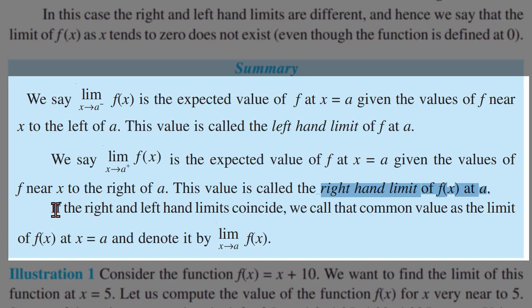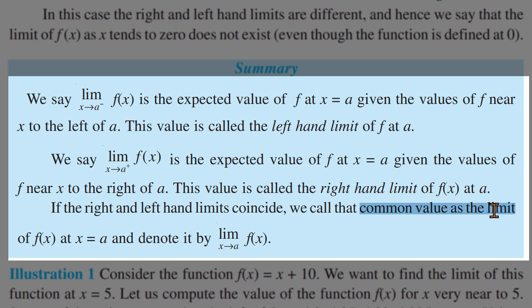The main rule is: the right-hand limit and the left-hand limit must coincide — they should be exactly the same value. If they are the same value, we call that the common value of f of x at x equals a, and we denote it as limit x tends to a of f of x. So right-hand limit and left-hand limit coincide — that is denoted by the equals symbol.